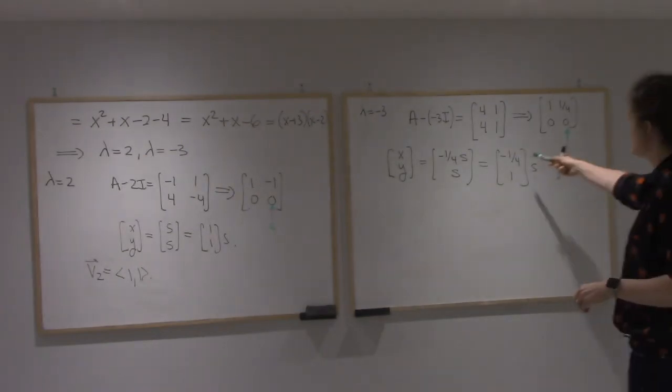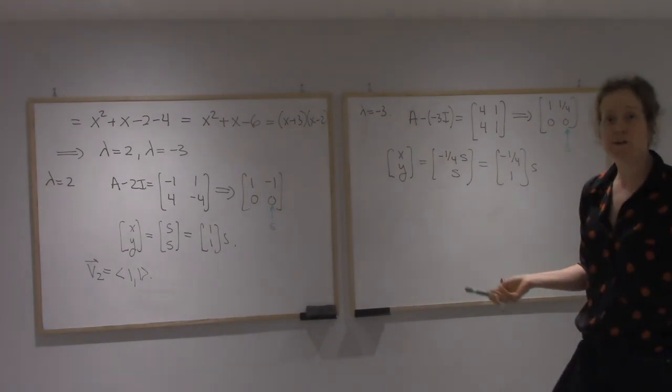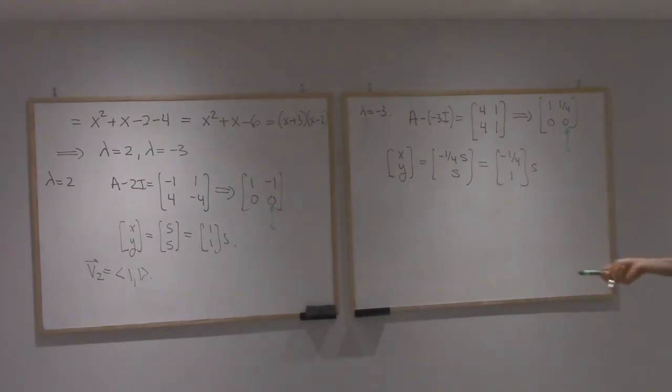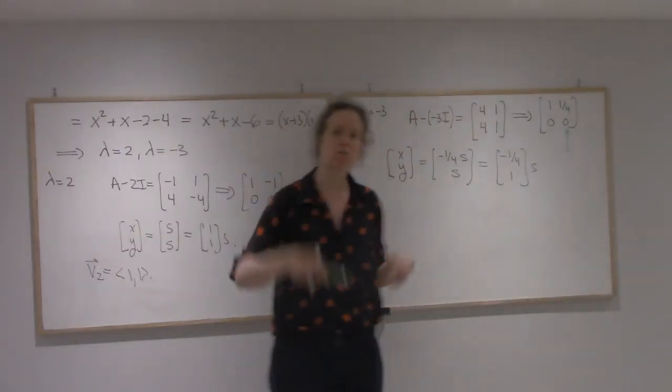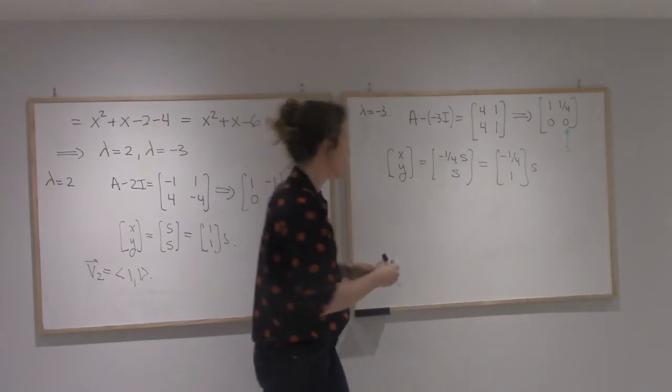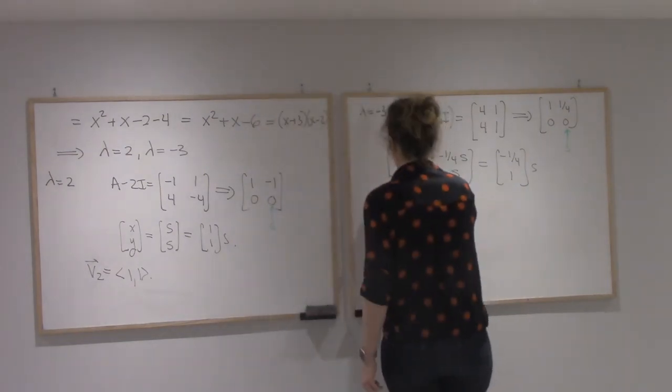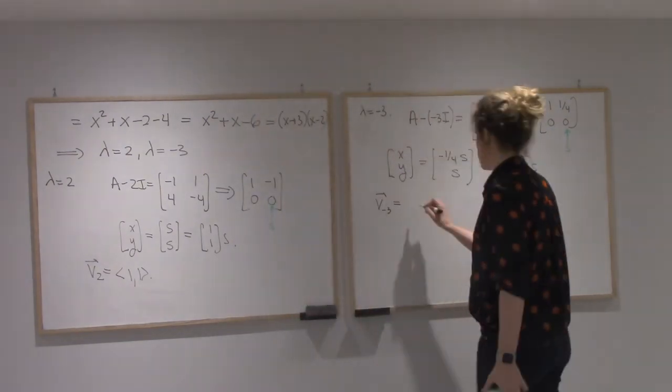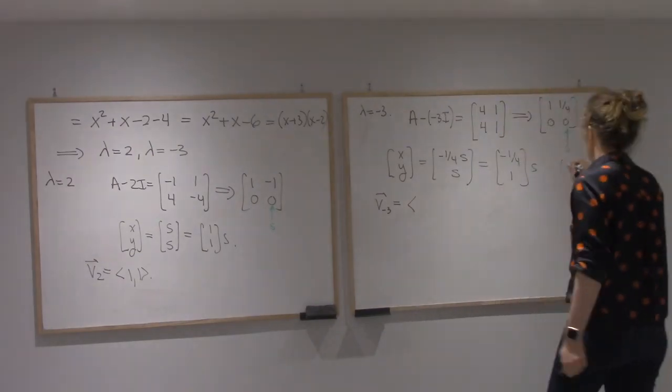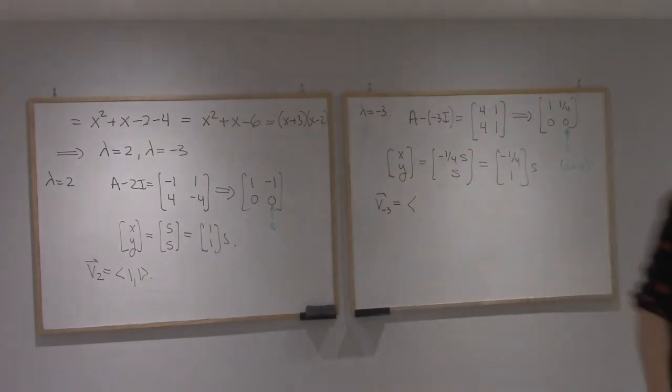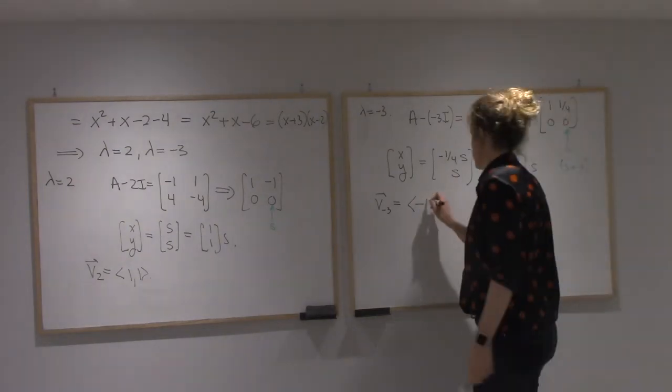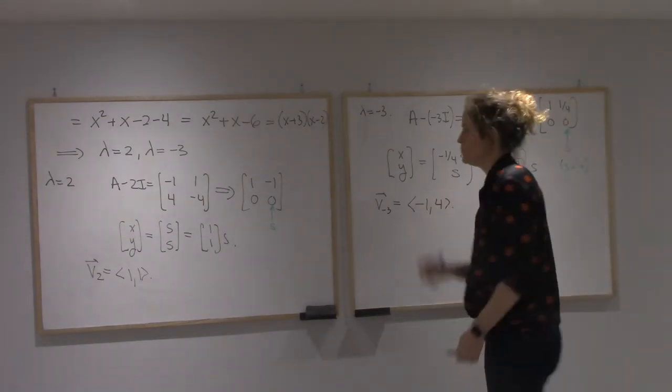Now, I could take (-1/4, 1), but since I don't like fractions all that much, I could just take s equals 4. That's going to be a slightly longer vector, but it's still in the eigenspace, and it's still a generator. So I'm going to take the eigenvector for minus 3, I'm going to take s equals 4, and I'll get (-1, 4).